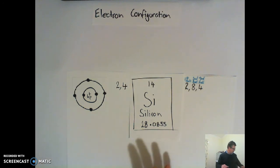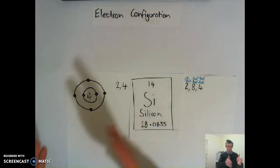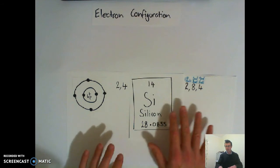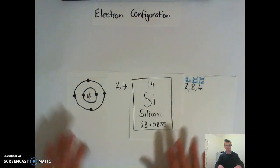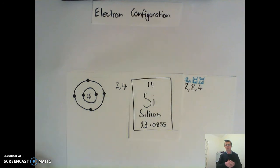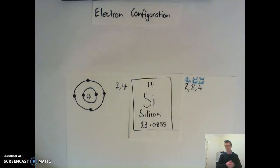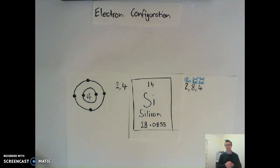Once you know the atomic number, you can do the electron configuration without needing to draw diagrams. Our first shell can only have two, our second shell eight, our third shell eight. We can tell there are three shells because we've got three numbers, which means it's in period three. The last number is four, meaning four valence electrons, which means silicon lives in group four.